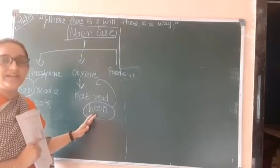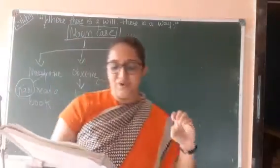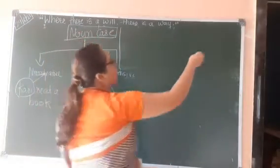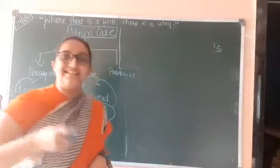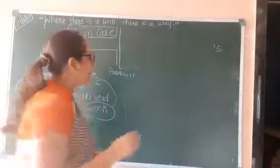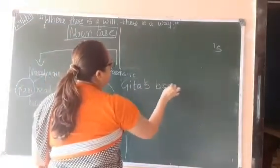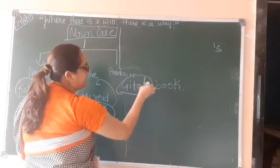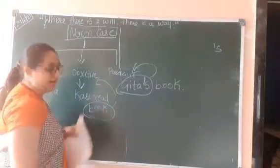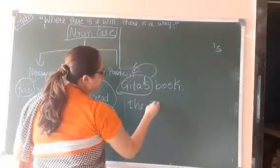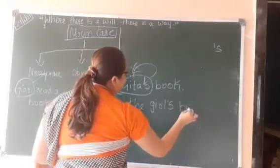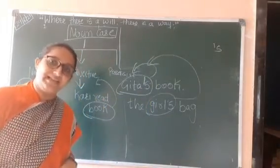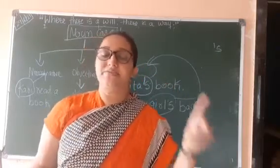Possessive case shows possession. An easy way to identify it: the noun always has an apostrophe-s. For example, Gita's book — it shows that the book belongs to Gita, and it has apostrophe-s, so that is possessive case. Another example: the girl's bag — the bag belongs to the girl, and it has apostrophe, so this comes in possessive case.